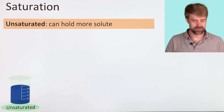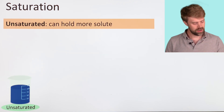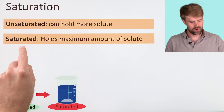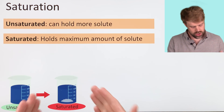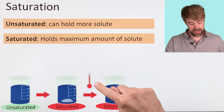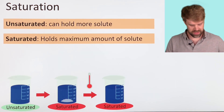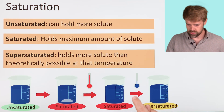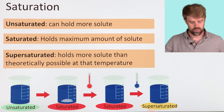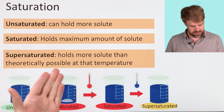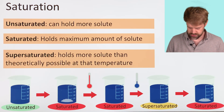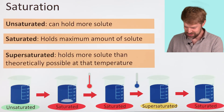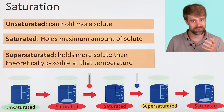Let's review what we've learned about solutions and saturation. As long as a solution can hold more solute, it's unsaturated. A saturated solution holds the maximum amount of solute at that temperature — no more solute can dissolve. If you raise the temperature, you can usually get more solute to dissolve and make a new saturated solution. Then, if you carefully lower the temperature, you can make a supersaturated solution, which holds more solute than theoretically possible at that temperature. But supersaturated solutions are unstable — if you add a little bit more solute, the extra solute recrystallizes and you have a saturated solution again. That's saturation.